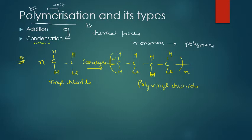In condensation polymerization, there will be removal of something when monomers join or polymerize. A byproduct like water, CO2, or ammonia will be removed — that is the defining feature of condensation polymerization. Let me give you an example.